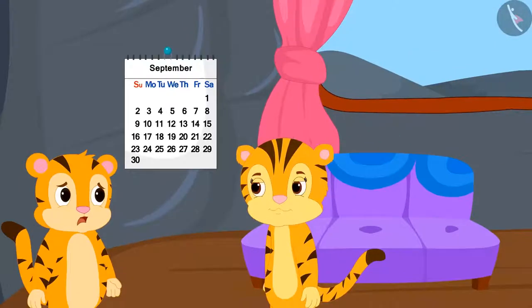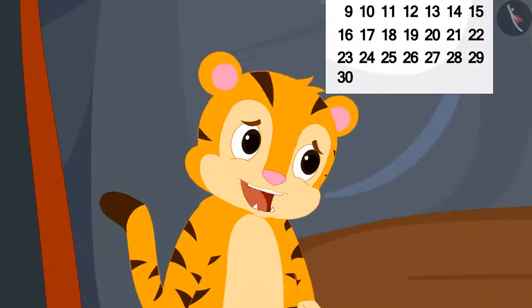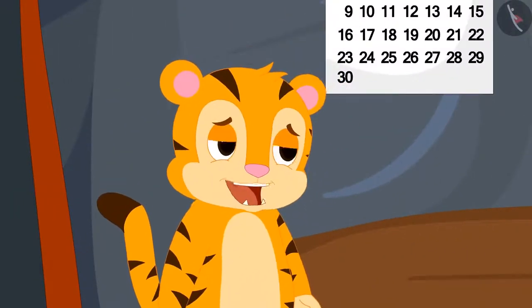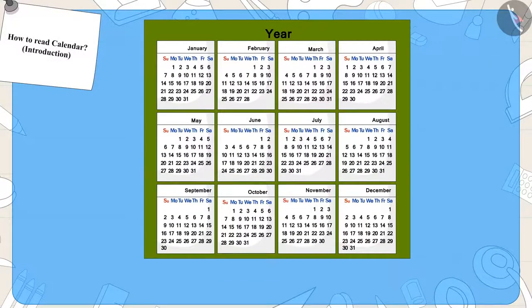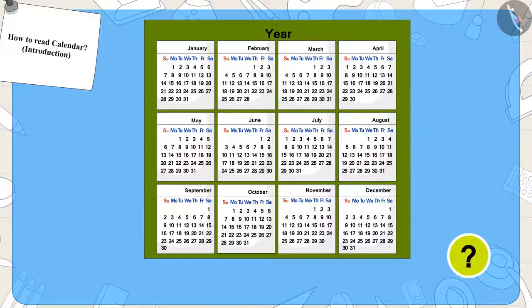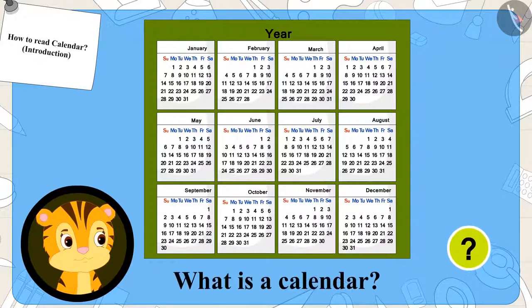Sher Khan could not understand how his mother found out by looking at the calendar how many days were left for the game. He asked his mother, "What is a calendar, mom?" Kids, do you know what a calendar is? Come see what Sher Khan's mother is explaining to him about the calendar.